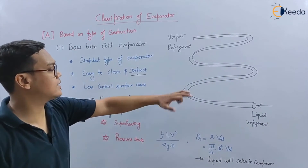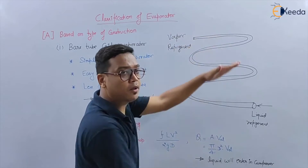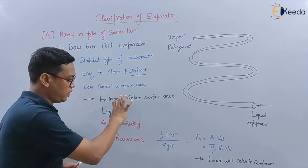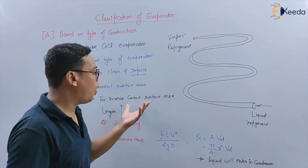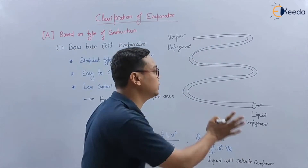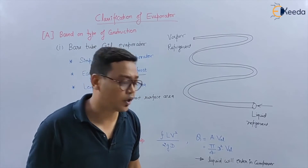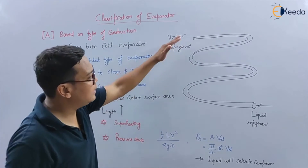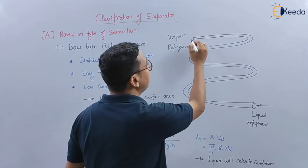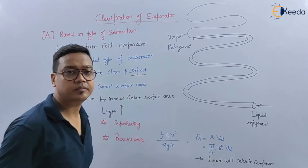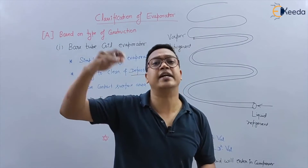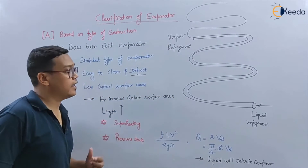You can easily see that the bare tube coil evaporator has less contact surface area because the spacing is low. If I want to increase the contact surface area so that maximum heat transfer can take place, I will increase the length of the coil. However, if I increase the length beyond a certain level, the first effect will be superheating of the refrigerant.